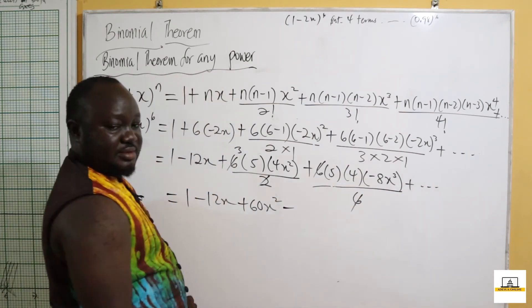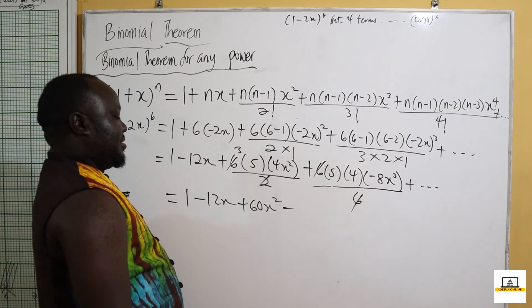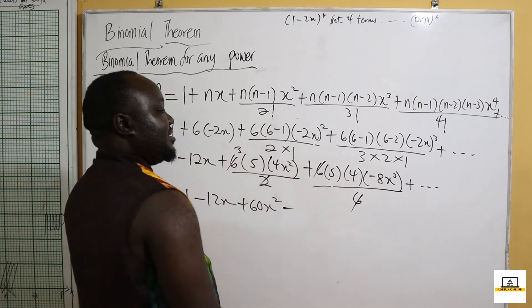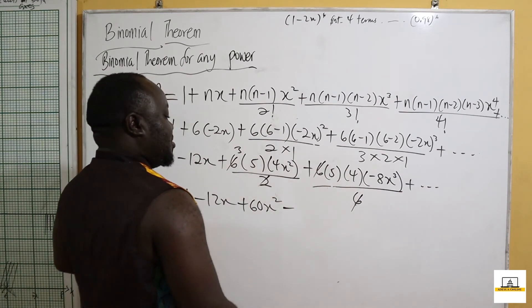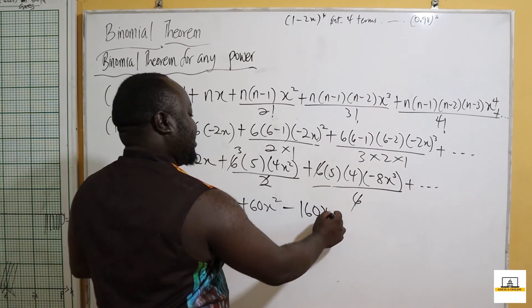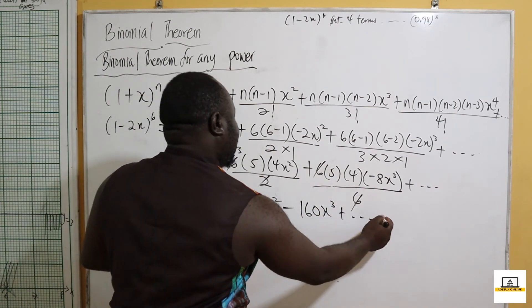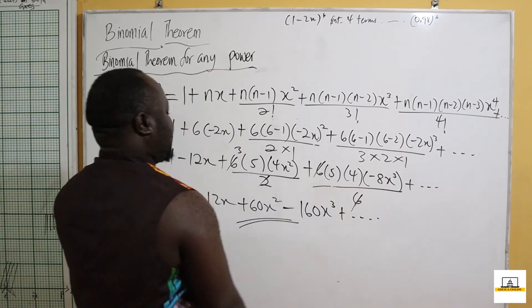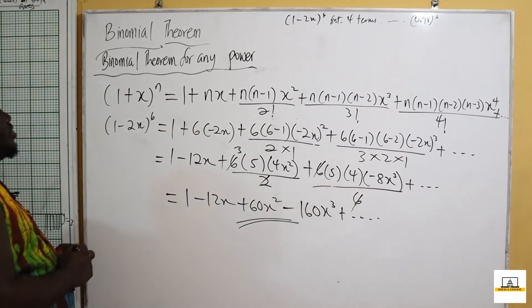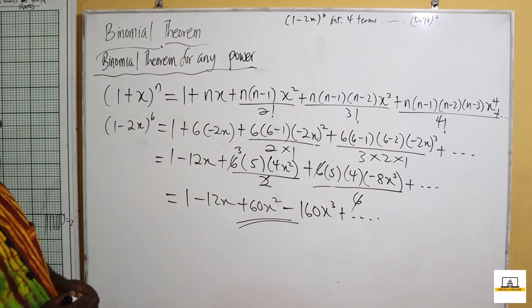32 × 5 = 160, so the fourth term is −160x³. The first four terms of (1−2x)^6 are: 1 − 12x + 60x² − 160x³.